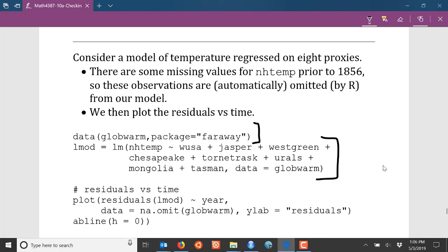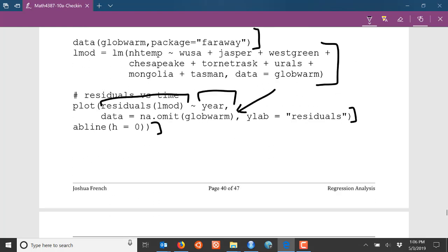I load that globwarm data from the faraway package. I fit my model and I store it in lmod, and then I plot my residuals versus time, making sure to omit any observations that are missing data. Then I specify a nice name for my y-axis and I add a horizontal reference line at y equal to zero.